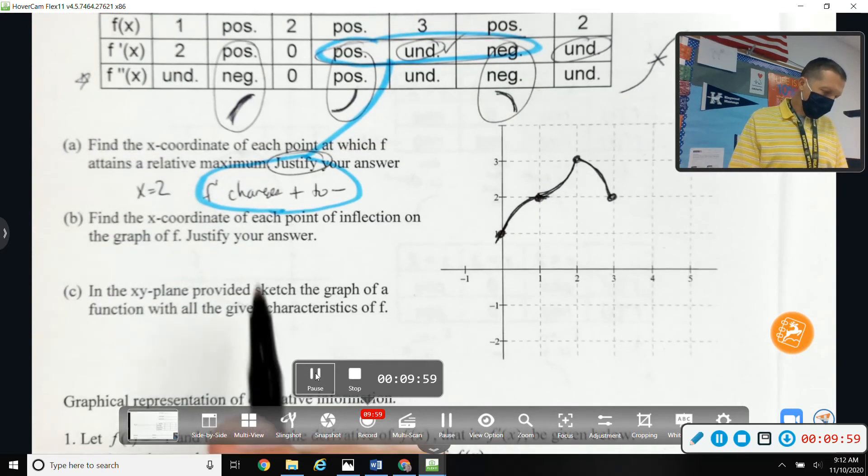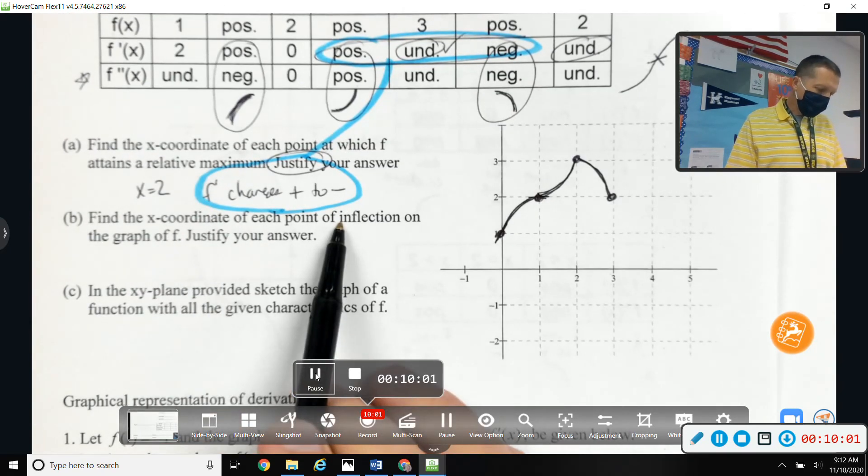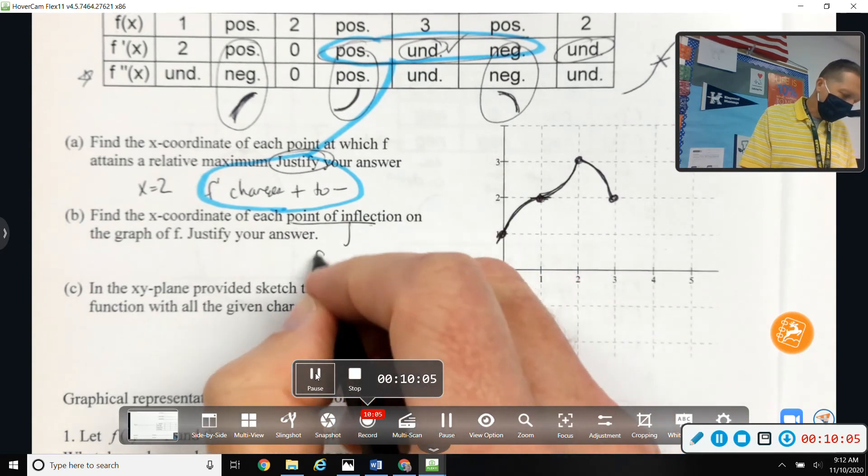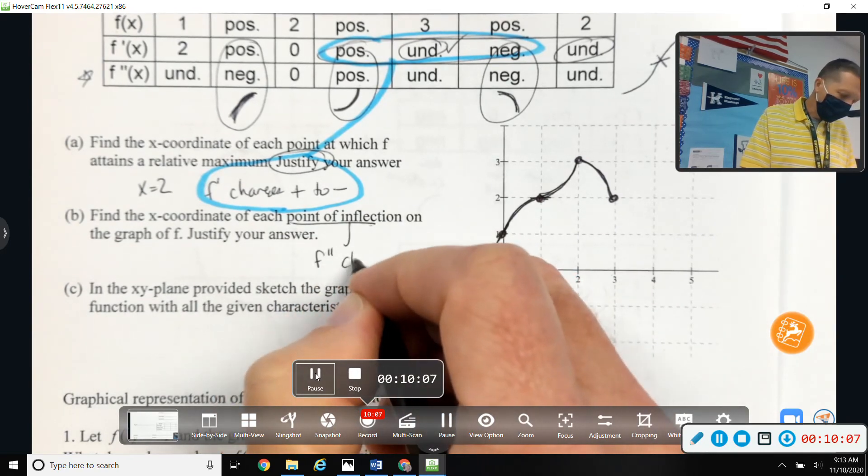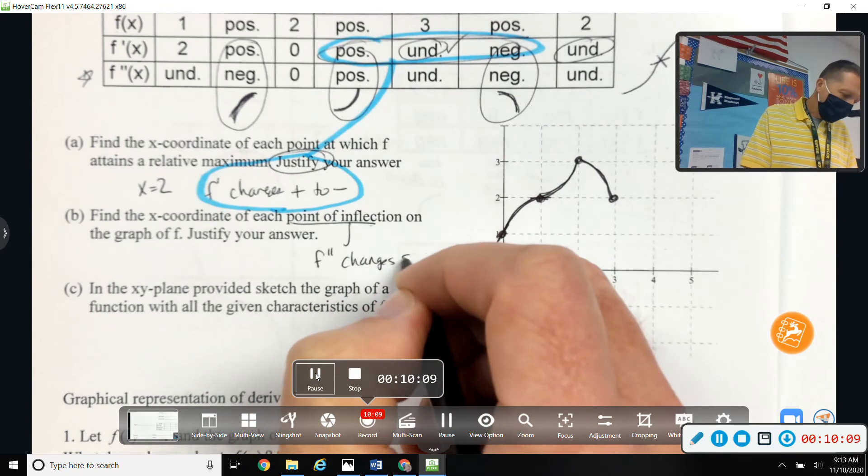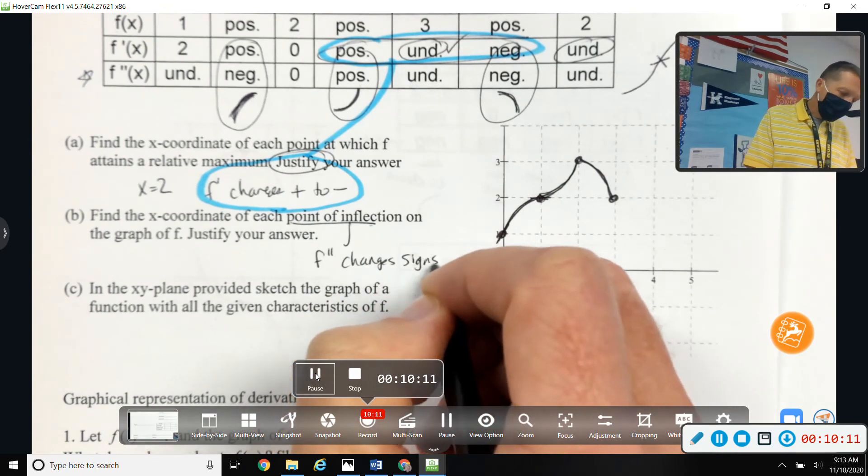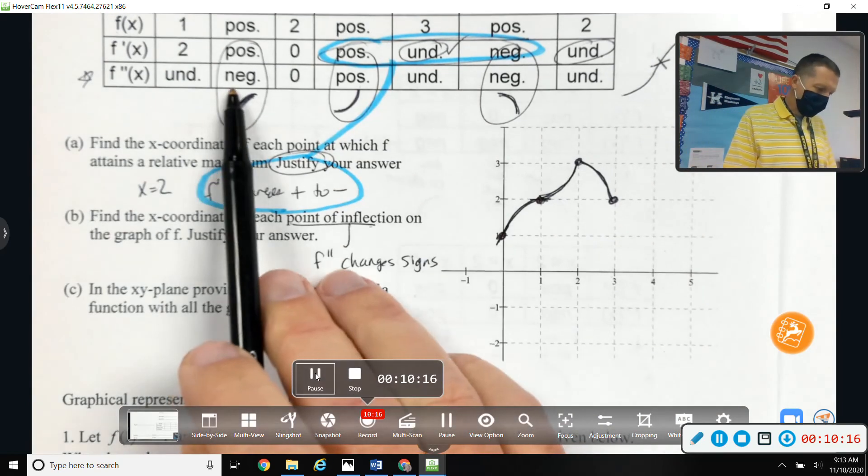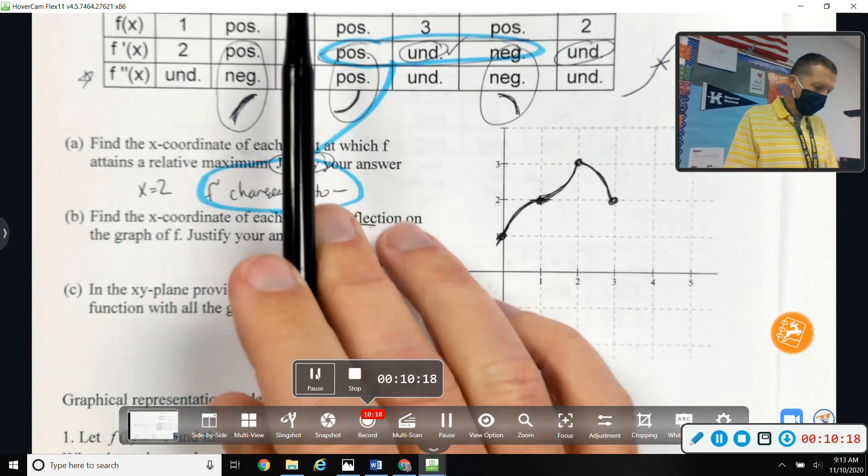Find the x-coordinate of each point of inflection. Oh, speaking of concavity changes. I can justify this before we even answer the question. F prime changes signs for concavity or for point of inflection. So negative to positive, so it looks like x equals 1.